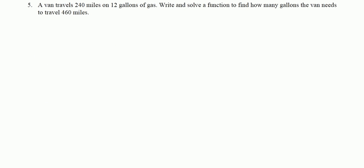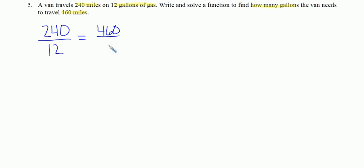Number 5: a van travels 240 miles on 12 gallons of gas. We need to find how many gallons the van needs to travel 460 miles. Let's set up a proportion: 240 miles over 12 gallons equals 460 miles over x gallons. Rather than cross-multiplying right away, I'd rather reduce first. 12 goes into 12 one time and into 240 twenty times, so we reduce 240 over 12 to 20 over 1.